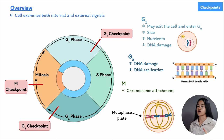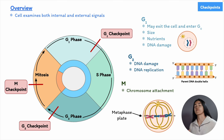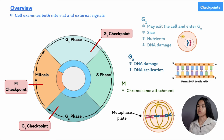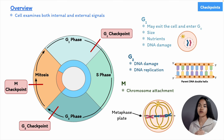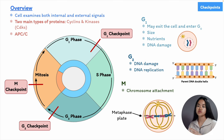Now we need to go through how these checkpoints actually work and how the regulatory proteins that move the cell cycle forward are activated or inactivated by internal and external signals via signaling pathways within the cell. The main proteins and protein complexes that start or control DNA replication and mitosis are periodically activated and then inactivated by the regulatory system. The two main types are proteins called cyclins, enzymes called CDKs (cyclin-dependent kinases), and an enzyme complex called the anaphase promoting complex.